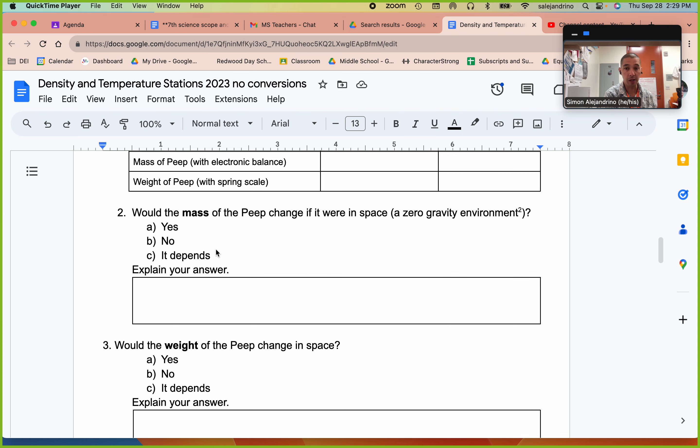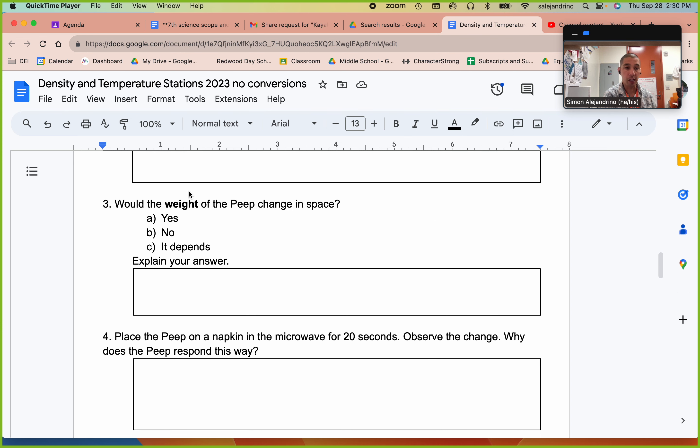But the weight does change because in space there's no gravity. So there's nothing pulling down on the peep. And if you had a little spring scale in space, nothing would pull it down. It would be a zero gravity environment, zero pull down on the peep, zero weight.